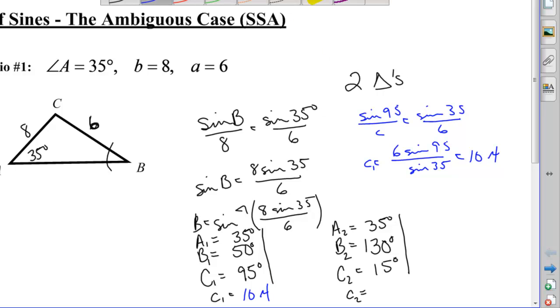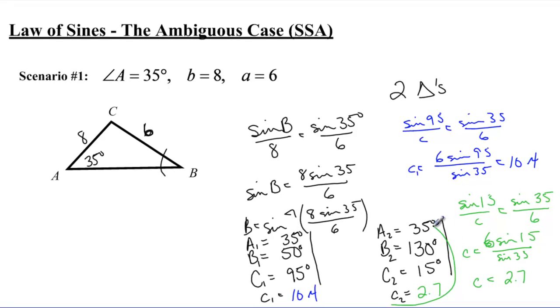I could also do it again and find little c too, and I would do sine of 15 over little c equals sine 35 over 6, and when I do that, I get c equals 6 sine 15 over sine 35, and I get little c equals 2.7. So there would be 2.7. So here's one triangle with my new angles, and then over here would be my other triangle with both angles as well. And that one is an example of where there's two triangles.